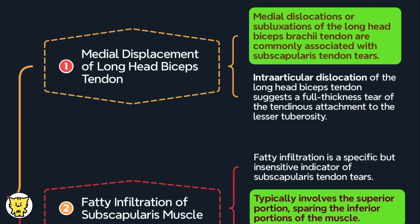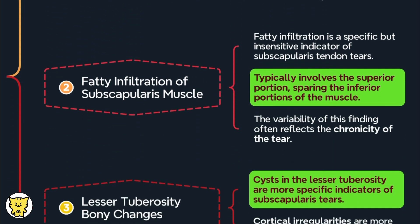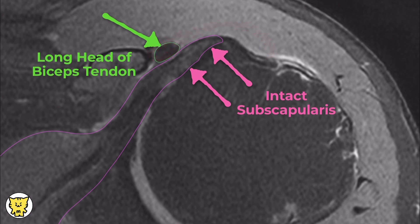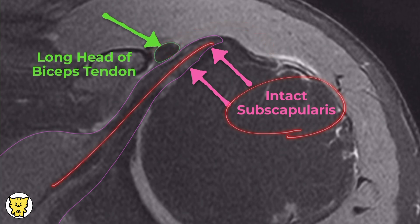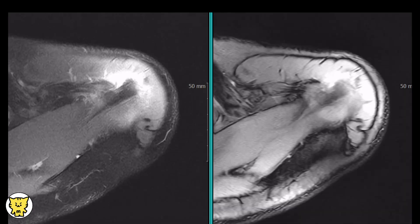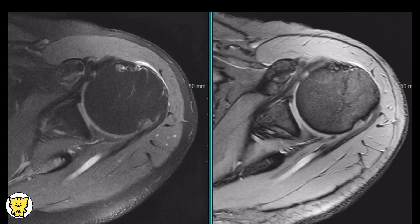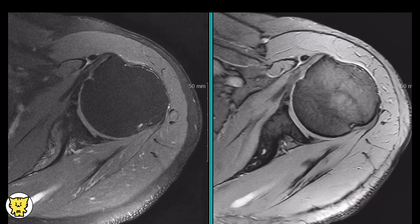However, it is important to note that medial dislocation of the biceps tendon does not always imply a subscapularis tear. In rare cases, the biceps tendon may dislocate anteriorly and position itself anterior to an intact subscapularis tendon.